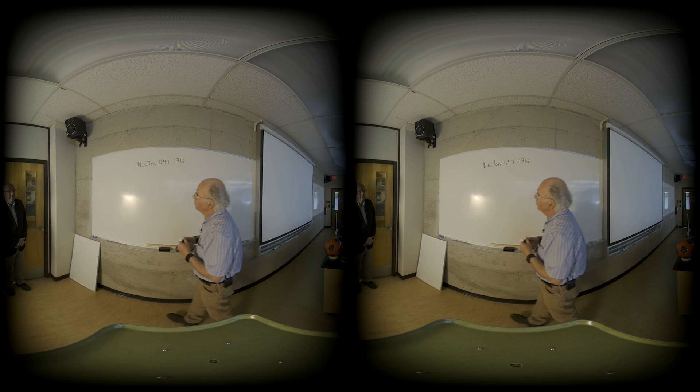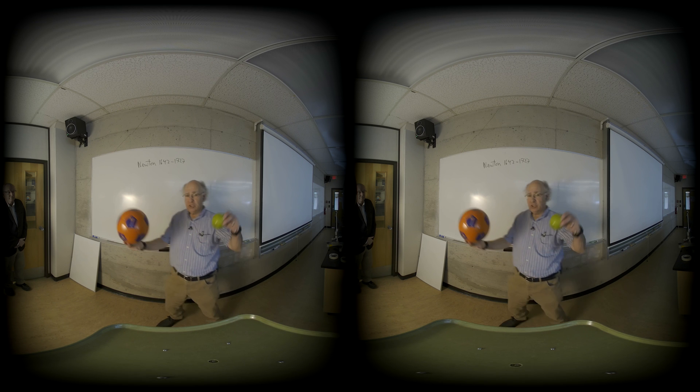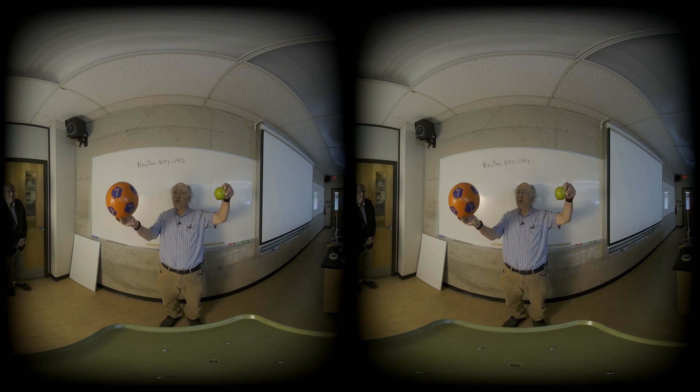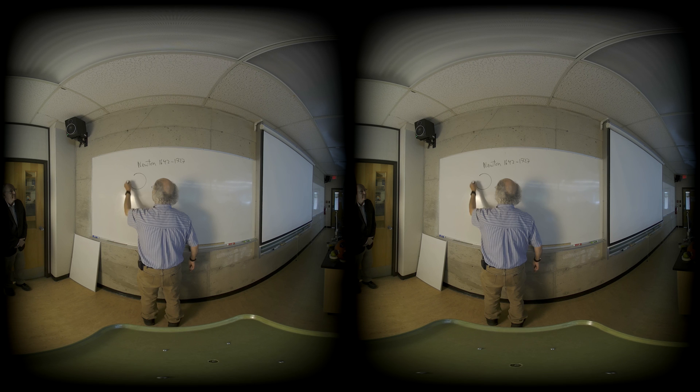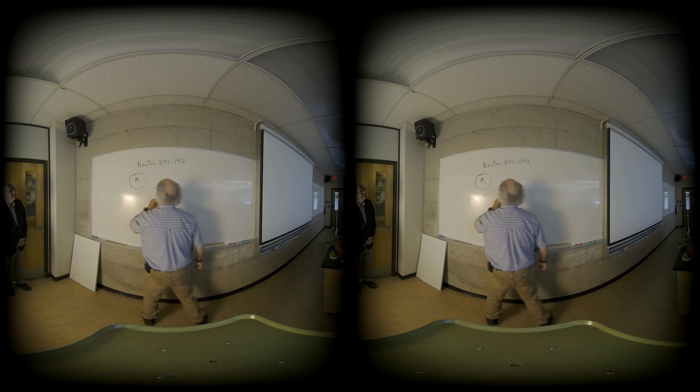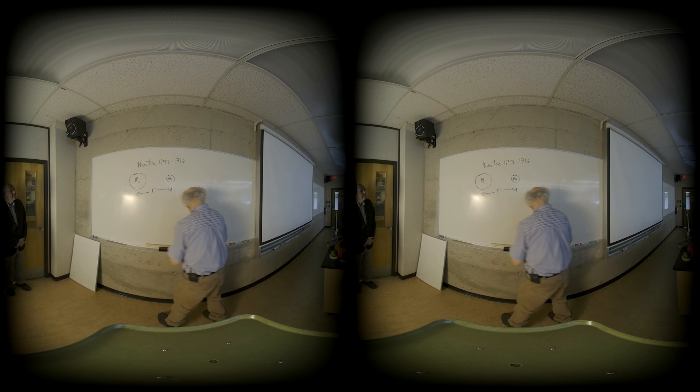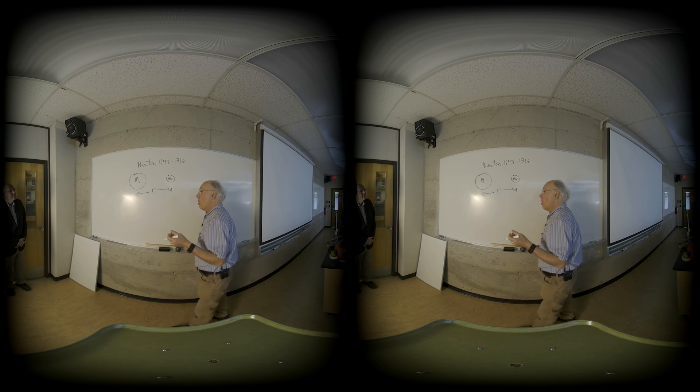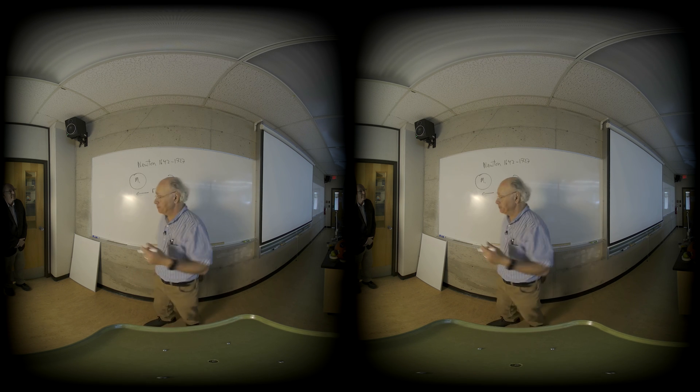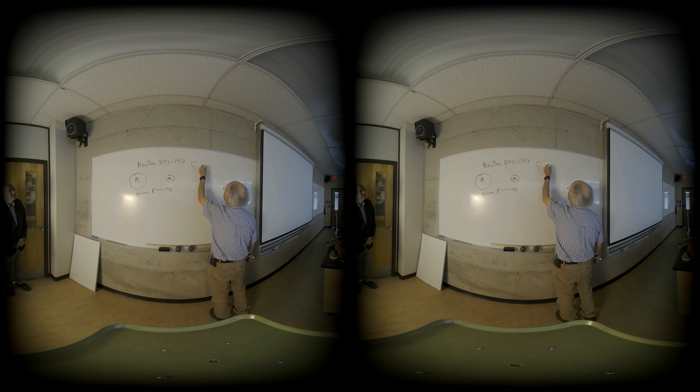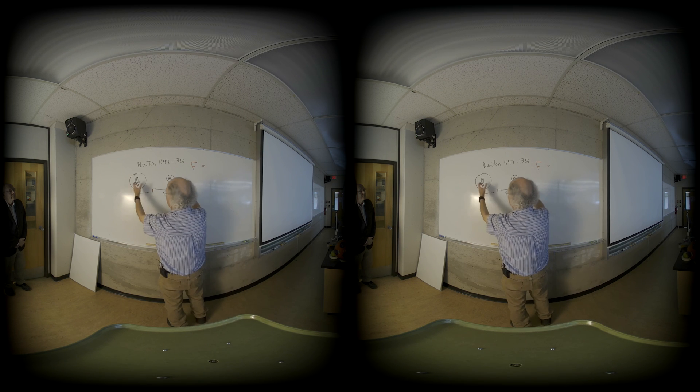What Newton proposed was looking at, for example, my apple and a soccer ball, what is the force between these two bodies. Let us look at the two bodies, call one M1, call the other body M2, separate them by a distance r. And in modern notation, what Newton proposed was what we now call the law of universal gravitation, and it looks like this.